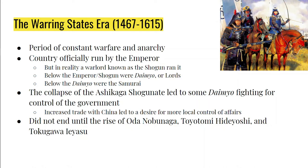This all begins because the power of the Ashikaga Shogunate begins to collapse. Those Shoguns never really gained control over all the Daimyo, and some of them fight against the Shogunate for control of the country. There's also increased trade with China that leads to a desire for greater local autonomy and control. The Warring States period doesn't end until the rise of three warlords, or great unifiers: Oda Nobunaga, Toyotomi Hideyoshi, and Tokugawa Ieyasu.